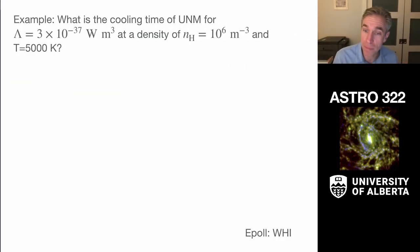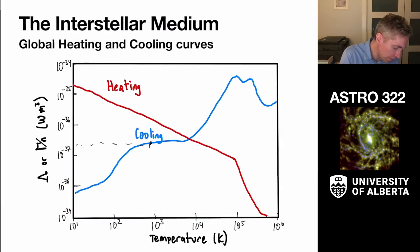So I wanted to close out by giving you an example by asking, what is the time for some part of the unstable neutral medium with a cooling rate of 3 times 10 to the minus 37 watts per cubic meter?